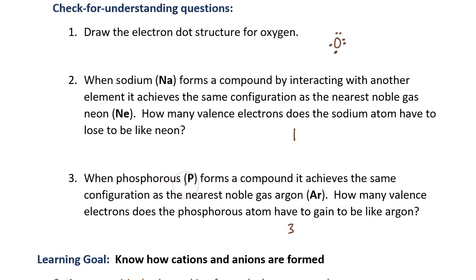Question two: how many valence electrons does the sodium atom have to lose to be like neon? Sodium is in group 1A and has one valence electron. If sodium loses that one valence electron, its electron configuration would be similar to neon. Question three: phosphorus is in group 5A. For it to be like the noble gas argon, phosphorus needs to gain three electrons, because 5 plus 3 makes 8 valence electrons, like argon has.